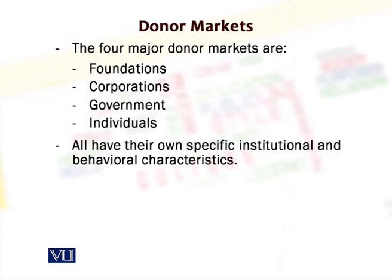Having said that, it doesn't mean that the process is that simple. As a matter of fact, it is quite elaborate, and there are certain ways and means followed by donors before they commit grants or financial aid to nonprofit organizations. This particular component is all about understanding the institutional and behavioral character of different donors, and the characteristics that form funding are to be looked at individually, one by one.